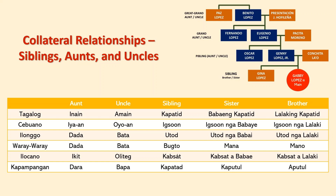Sister is Babaeng Kapatid in Tagalog, Igsuon na Babae in Cebuano, Utod na Babae in Ilonggo, Mana in Waray-Waray, Kabsat na Babae in Ilocano, and Kaputul in Kapampangan. Brother is Lalaking Kapatid in Tagalog, Igsuon na Lalaki in Cebuano, Utod na Lalaki in Ilonggo, Mano in Waray-Waray, Kabsat na Lalaki in Ilocano, and Aputul in Kapampangan.